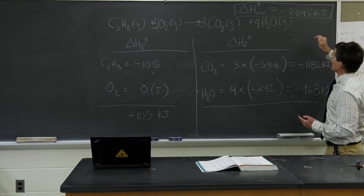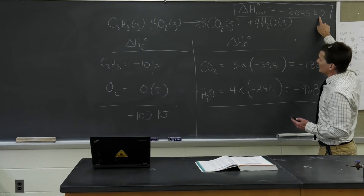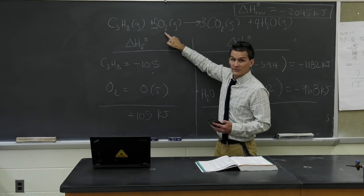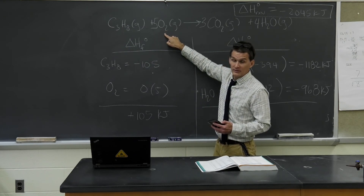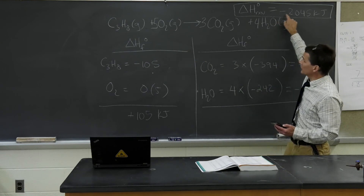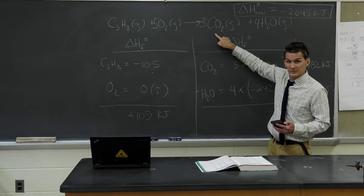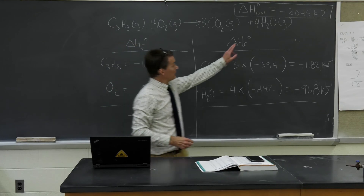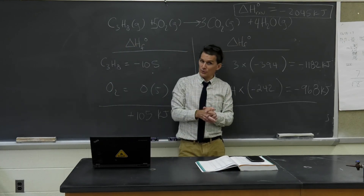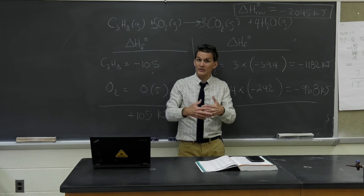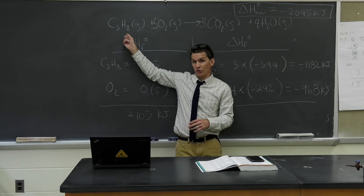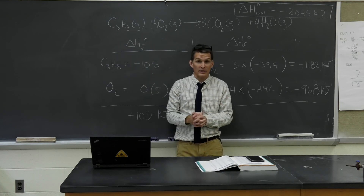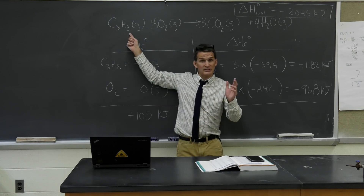That's negative 2045 kilojoules for every mole of propane combusted. We could equally say for every five moles of oxygen gas that reacts, or for every three moles of carbon dioxide gas produced. Let me stop and ask if this makes sense. My enthalpy change is negative — that's exothermic, a release of energy. I'm burning propane, and we know combustion reactions release energy. So it makes sense that the enthalpy for this reaction is negative.